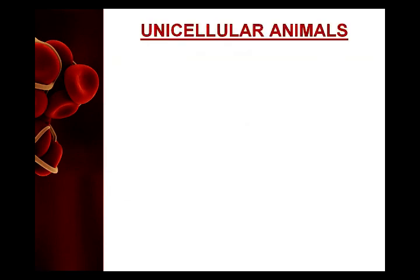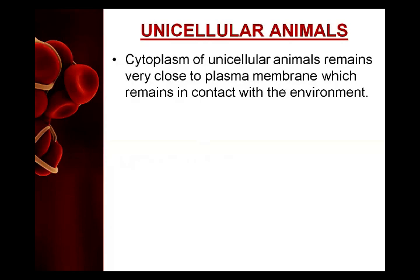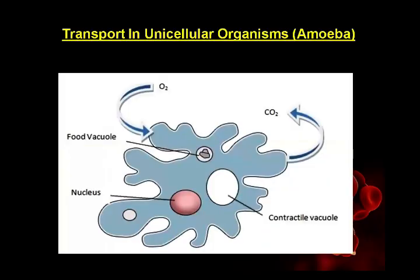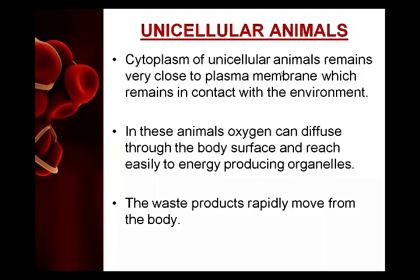First we are going to learn about transport in unicellular animals. What you see on your screen is the amoeba. In unicellular organisms, the cell membrane and the process of diffusion are very important for transport.